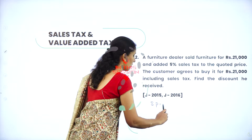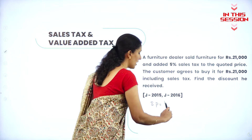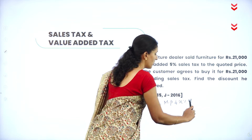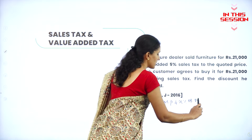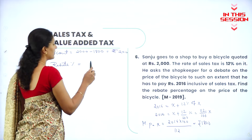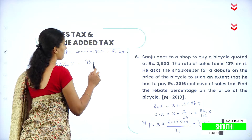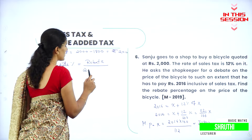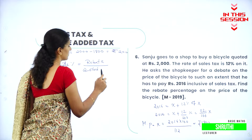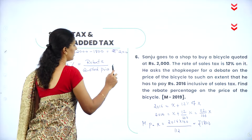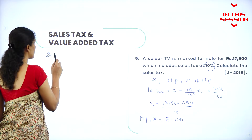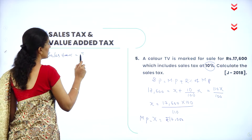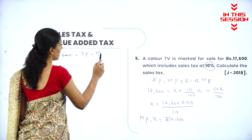Selling price is equal to market price plus x percent of market price. Rebate is equal to rebate divided by the quoted price into 100. Sales tax is equal to selling price minus market price.